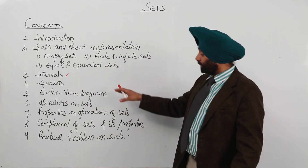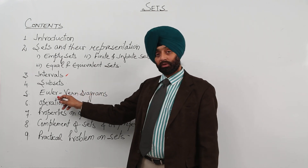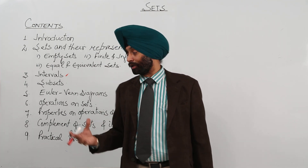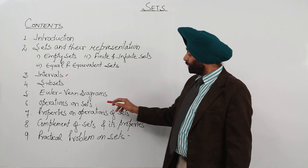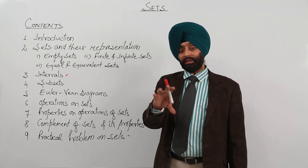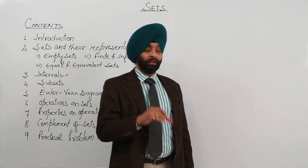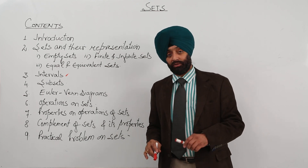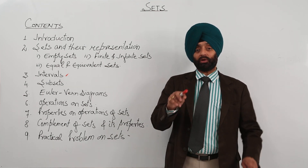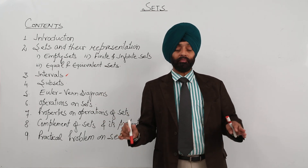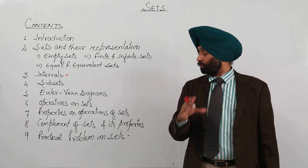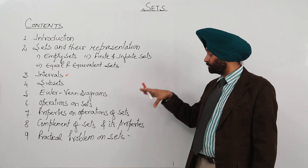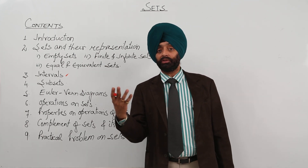Then there is the very interesting concept of the Venn diagram. The mathematician Venn gave different types of set relationships in presentation form, and that is called the Venn diagram. Next, we have operations on sets — union of sets, properties of union, intersection of sets, properties of intersection, and difference of sets. We will use Venn diagrams throughout all these operations for better understanding, and we will also cover De Morgan's law.